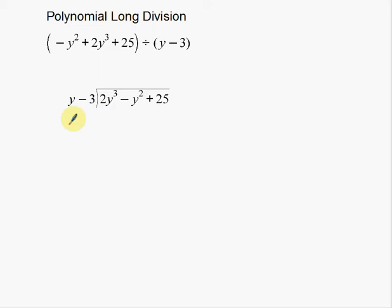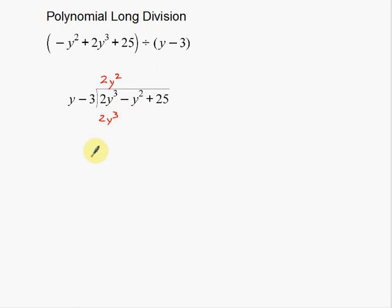Now we start dividing. Ask yourself: y times what gives me 2y³? Well, y times y² gives y³, and 1 times 2 gives 2, so 2y² is the answer. So 2y² times y gives 2y³. But since we're dealing with polynomials, we also have to multiply 2y² times the negative 3 in the divisor, giving negative 6y².